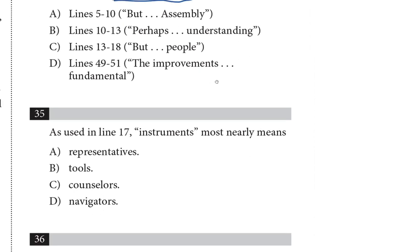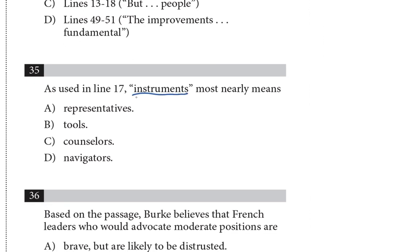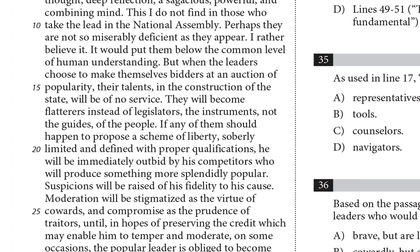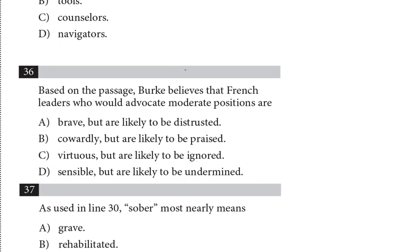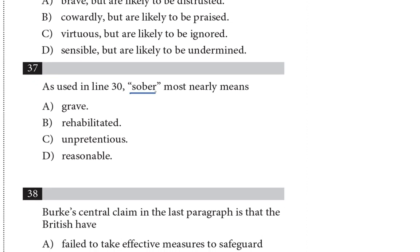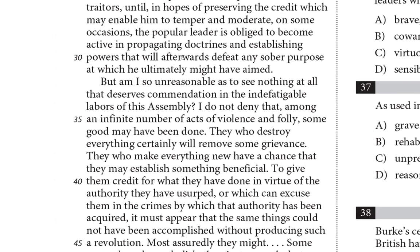Question 35 asks for the meaning of the word 'instruments' as used in line 17 — I'm going to look for that. Lines 15 to 17 — there it is, 'instruments.' Moving on to question 36: Burke believes that French leaders who would advocate moderate positions are blank — I'll underline 'moderate positions.' Question 37 asks for the meaning of 'sober' as used in line 30. I'm going to look for line 30, find the word 'sober,' and underline it.